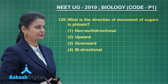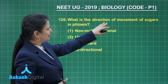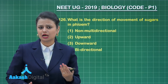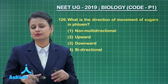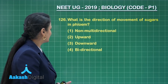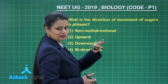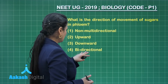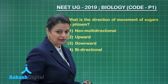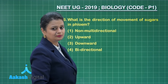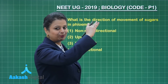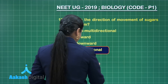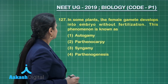Question 126 is related to phloem translocation: what is the direction of movement of sugars in phloem? Movement can be upward, downward, or sideways — so it is multidirectional. Looking at the options: non-multidirectional is wrong, upward only is wrong, downward only is wrong. It can be bidirectional — from top to bottom or from base to top. So the right answer is option number four.